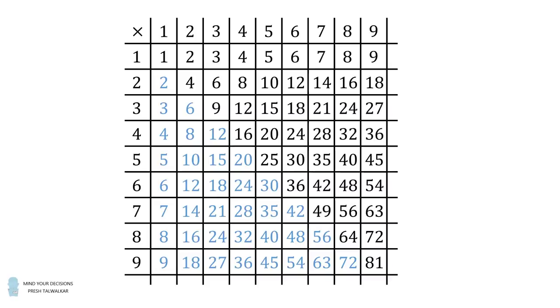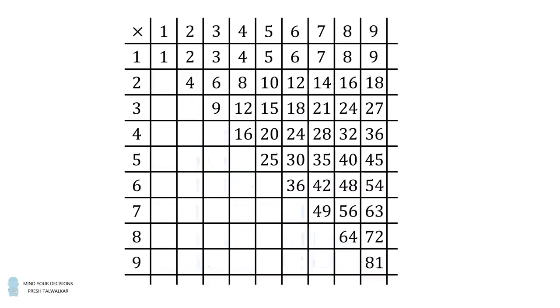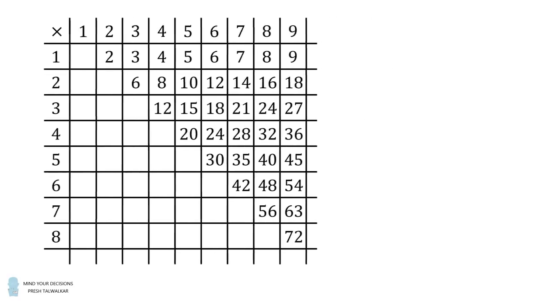2 times 1 is equal to 1 times 2. So we don't have to consider these possibilities, they'll be considered by the numbers that are above the diagonal. Next, we know we have two different one-digit numbers, so we can eliminate the diagonal. So now let's clean up our table. These are all the possible products that we need to consider.